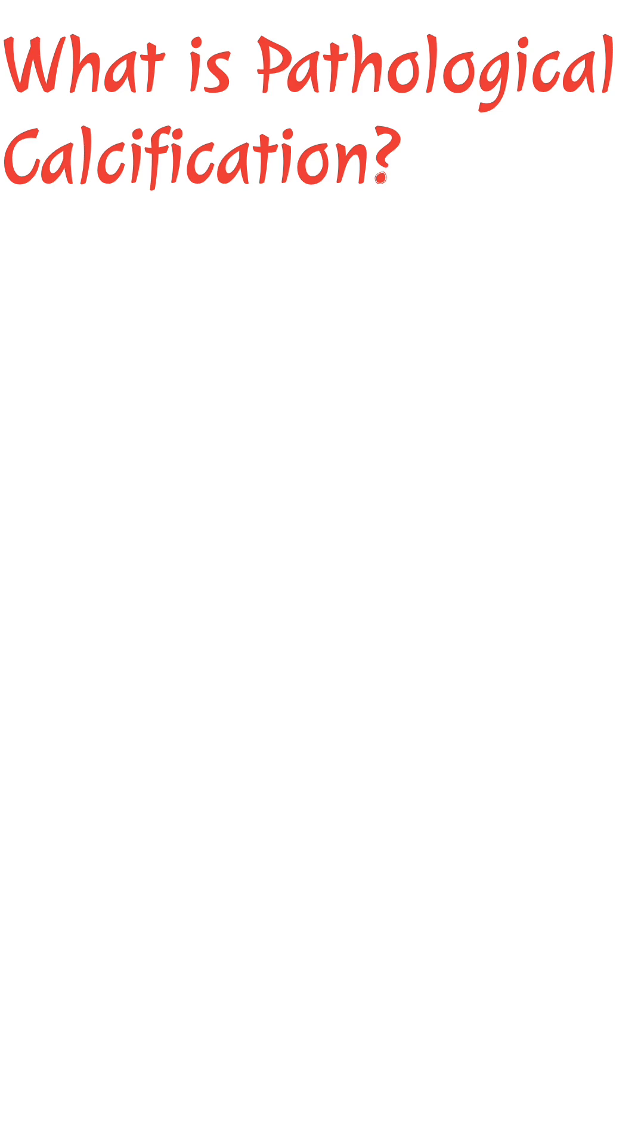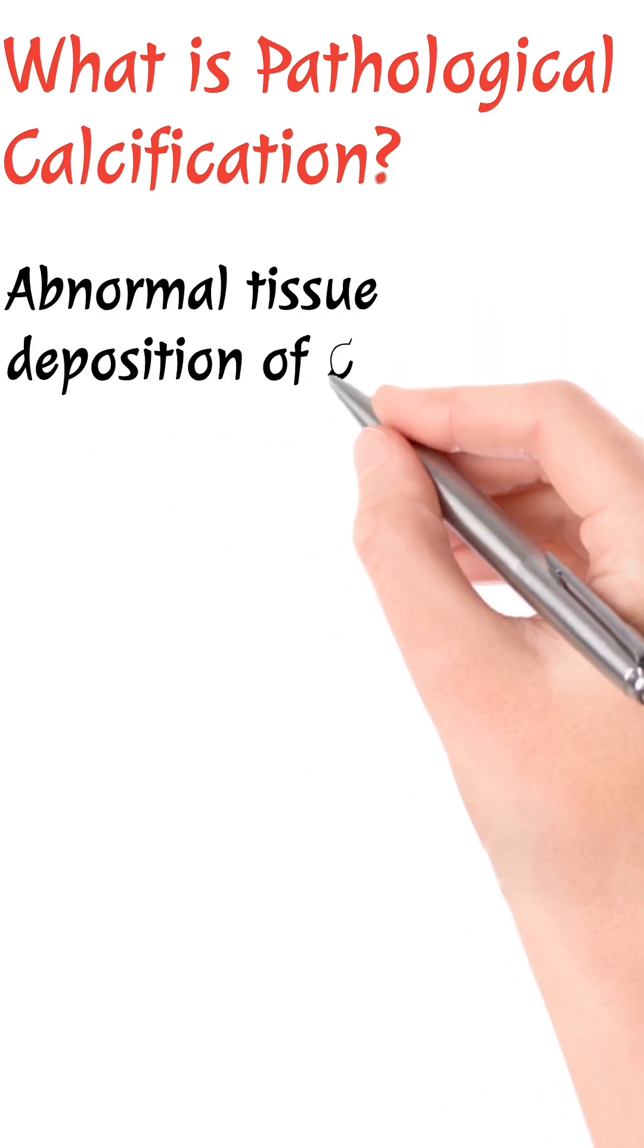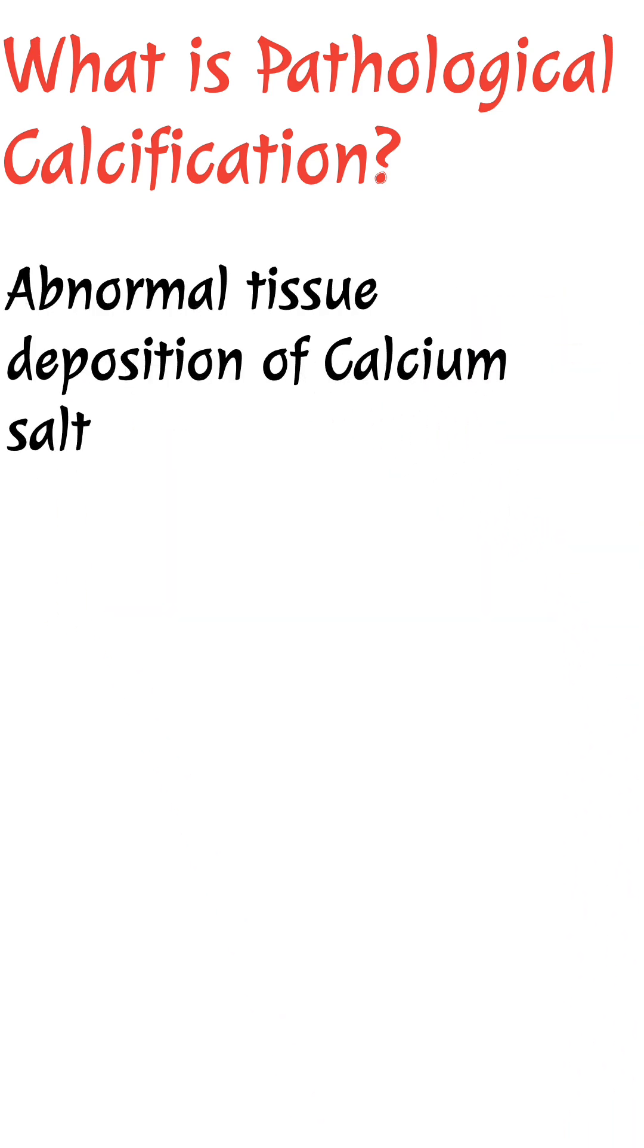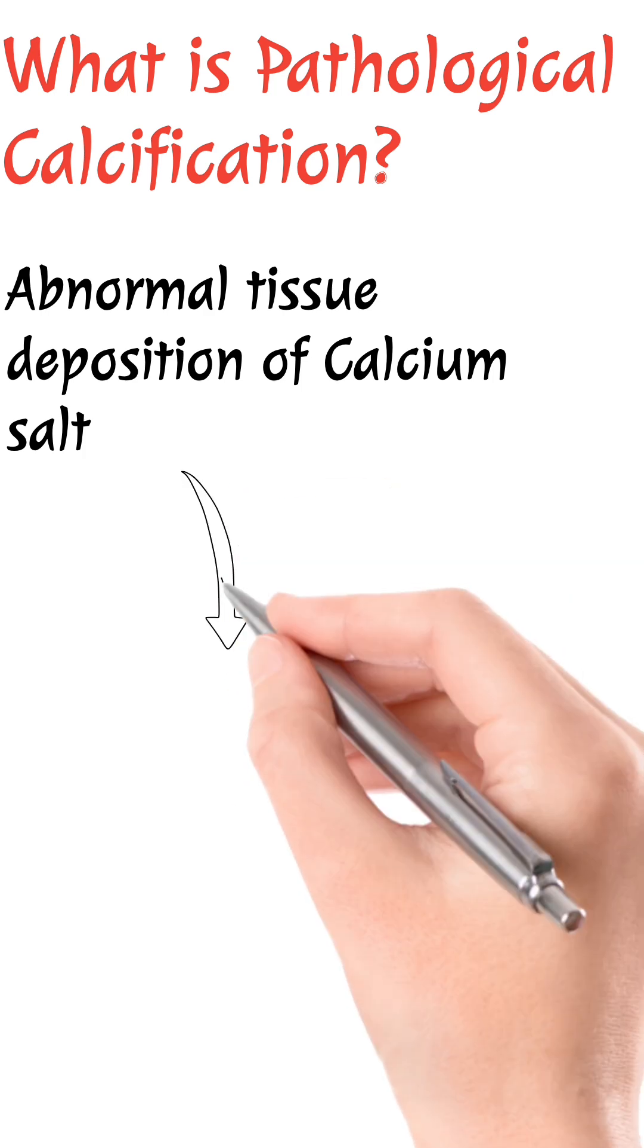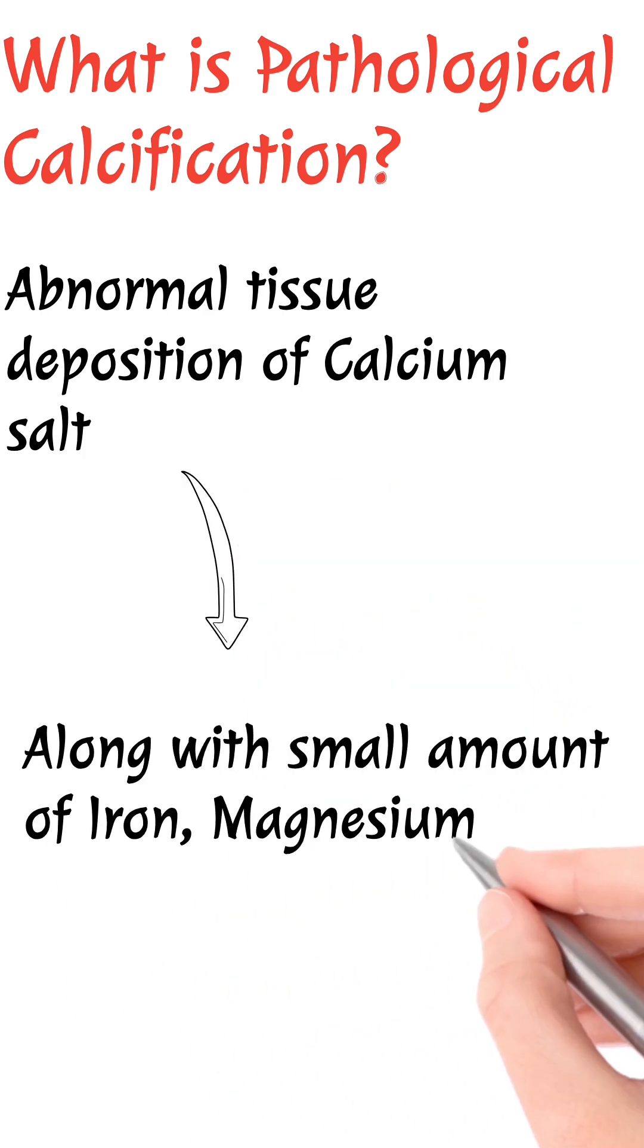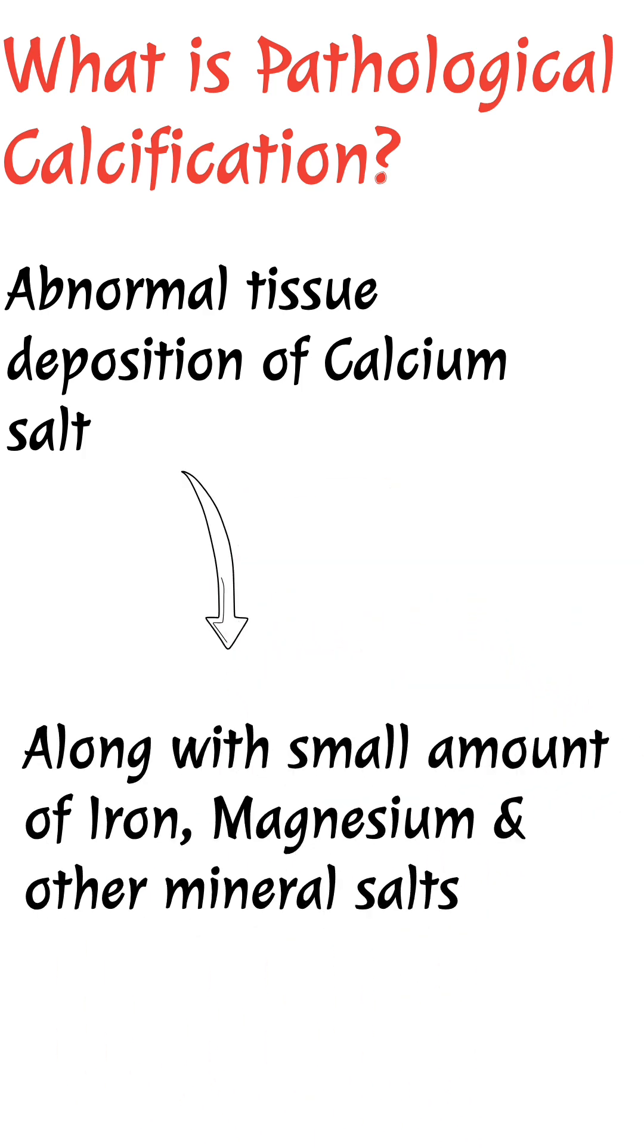Pathological calcification is abnormal tissue deposition of calcium salts, along with small amounts of iron, magnesium, and other mineral salts.